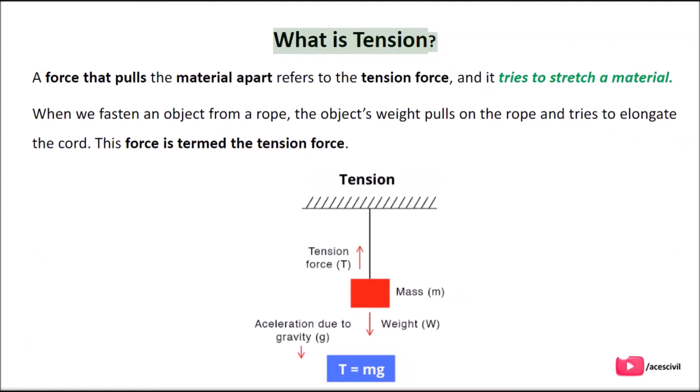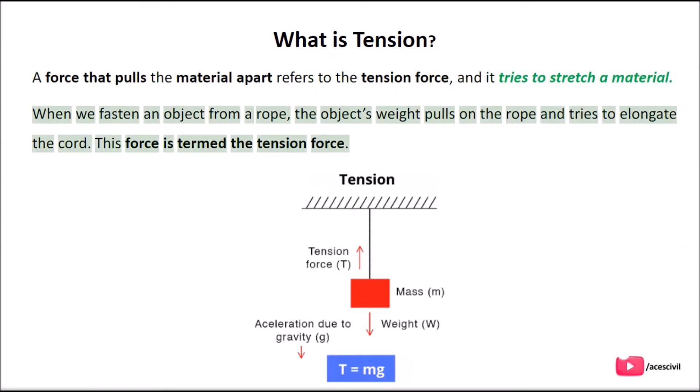What is tension? A force that pulls the material apart refers to the tension force, and it tries to stretch a material. When we fasten an object from a rope, the object's weight pulls on the rope and tries to elongate the cord. This force is termed the tension force.